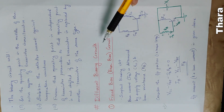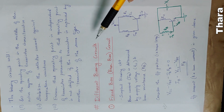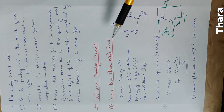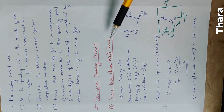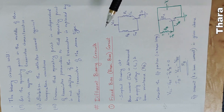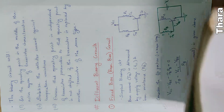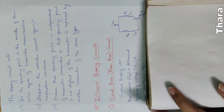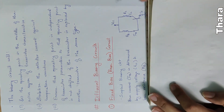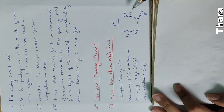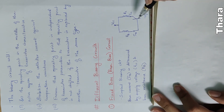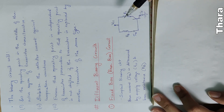Biasing circuits — we have different biasing circuits. The first is fixed bias, also called base bias circuit. Fixed bias is the base bias circuit.